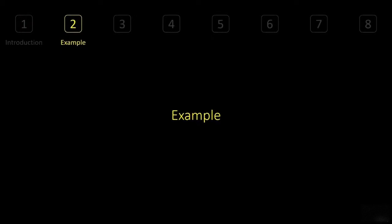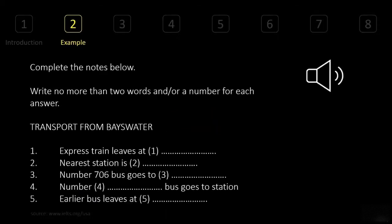Next, let's look at an example. Without seeing what kind of question you'll be dealing with, it will be hard to understand it. This is how form completion looks: there will be a title, instructions, and below that the questions. This sample is from ielts.org — they have given some practice samples. I'm going to play the audio and you're going to answer the questions as you listen.